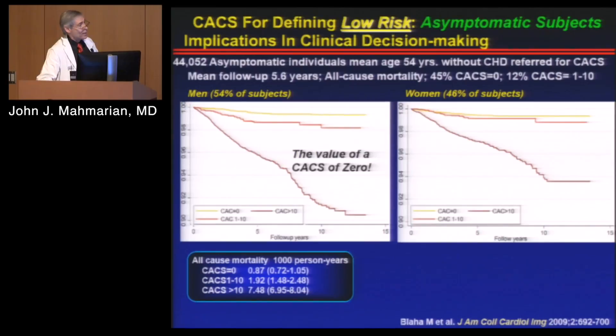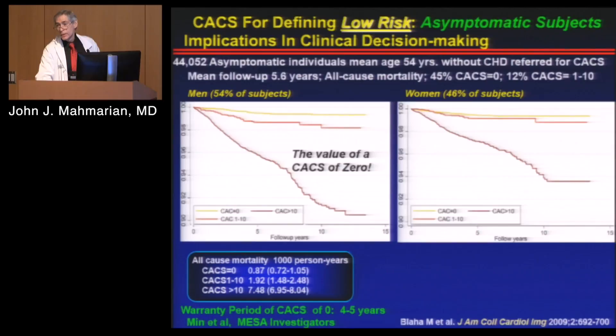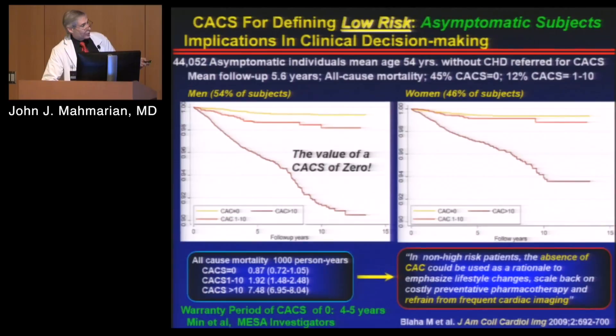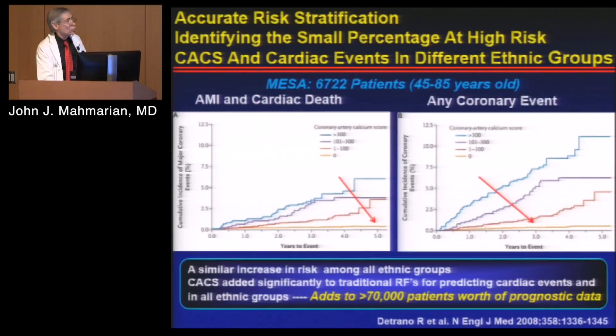A calcium score of zero has a warranty period of about four to five years — about 20% of people with a calcium score of zero will convert to non-zero at year five. A score of zero precludes having to do many other things — you wouldn't put a patient with high cholesterol on statins if they had a calcium score of zero, because they've proven they're not laying down plaque. Conversely, if you have a calcium score above zero, the higher the calcium score the worse you do, irrespective of ethnicity — as shown by the MESA investigators.